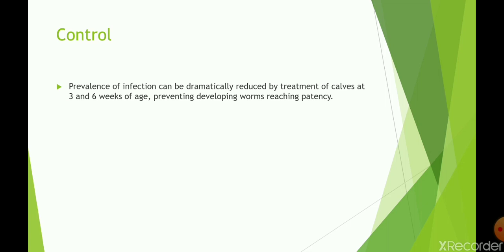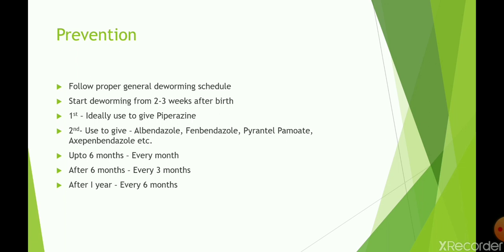For control: the prevalence of infection can be dramatically reduced by treating calves at 3 and 6 weeks of age, thereby preventing worms from reaching patency. For prevention, always follow a proper general deworming schedule, starting deworming from 2 to 3 weeks after birth.